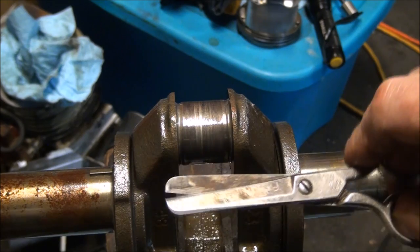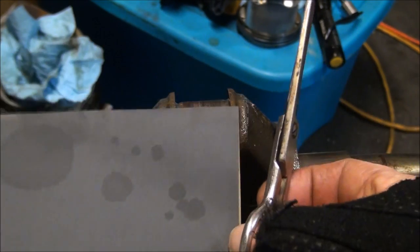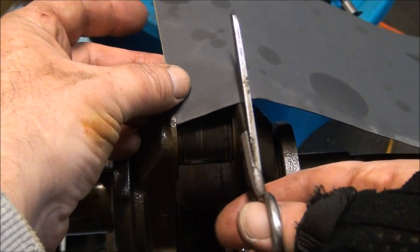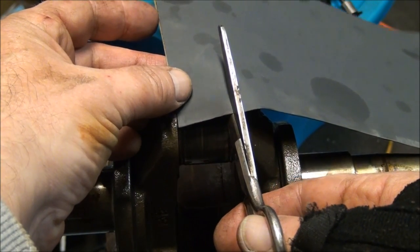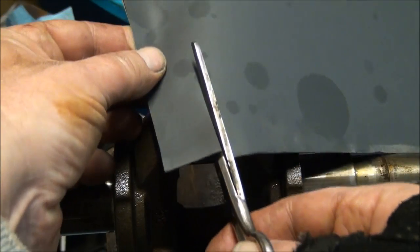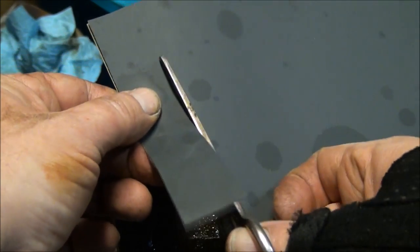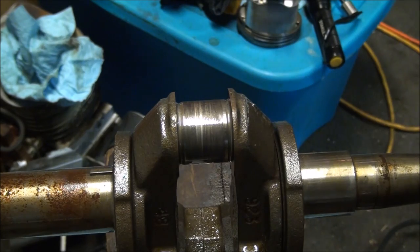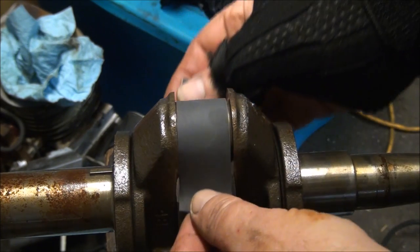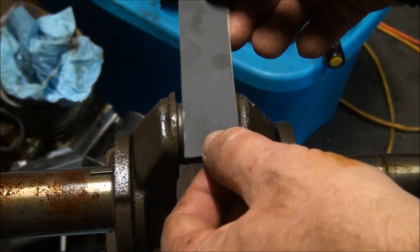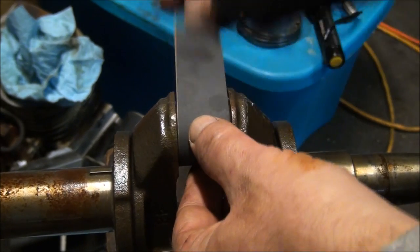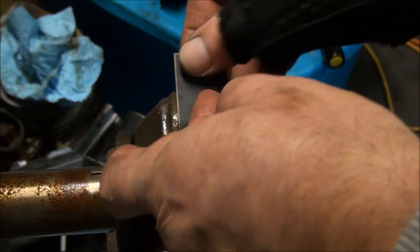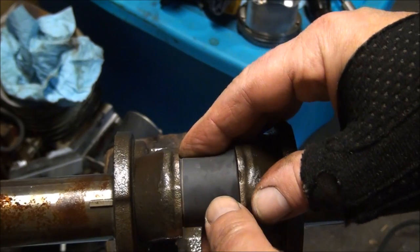These are the only scissors they'll let me use around here—the round-tipped. I hurt myself with the other ones. Let's see, right about there. Good enough. Then we'll wrap this around here like so. Get it as tight as we can. Now we need a rope.